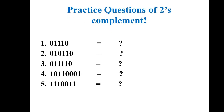We have some practice questions. For example, if you are given 01110, first convert it to one's complement: that gives 10001. Then add one to the least significant bit — you get 1 plus 1, and for that you should refer to the binary addition video lecture.